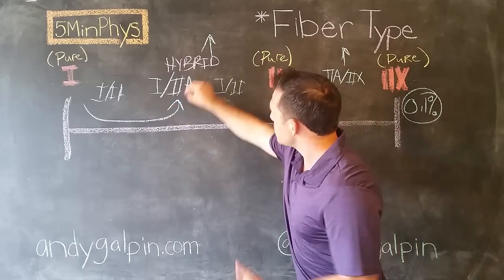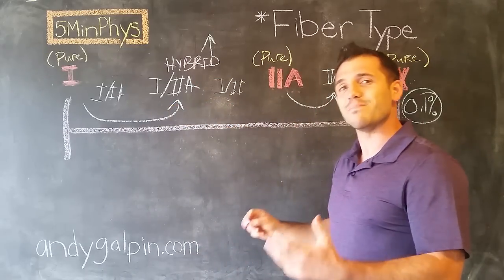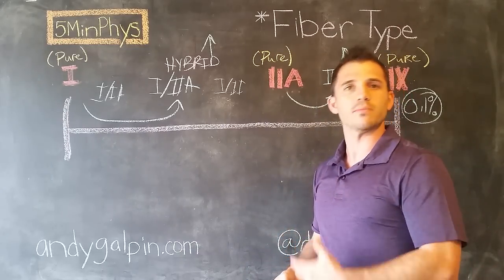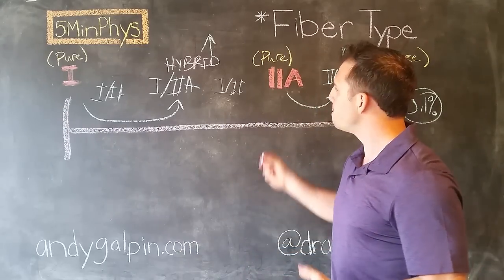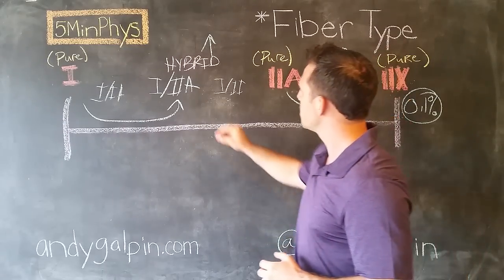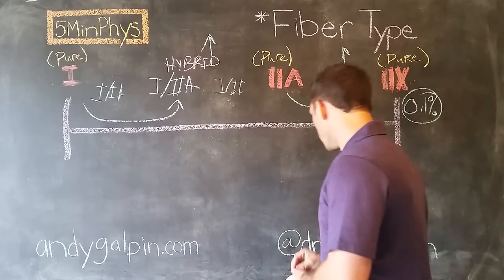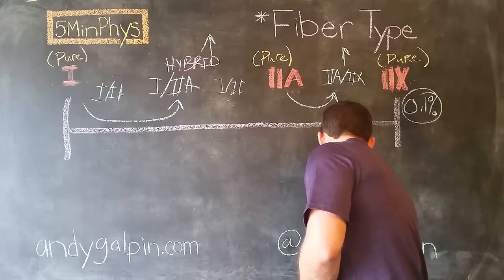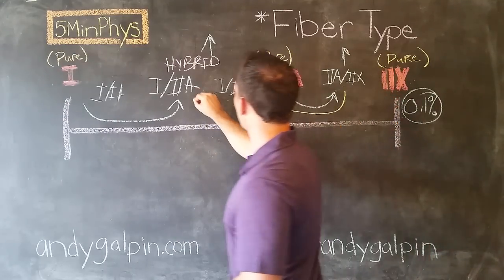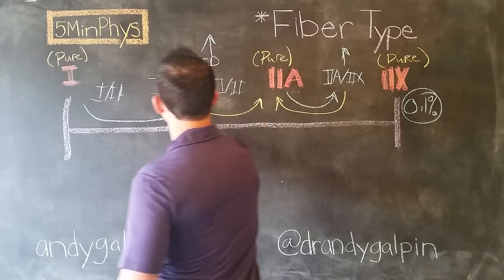Okay, so if we become inactive, we gain more of these hybrids. And it actually doesn't matter what we do activity-wise, whether we strength train, do intervals, run, swim, do endurance training. But whenever we do any kind of physical activity, we see the exact opposite, where now we start turning back into pure types.